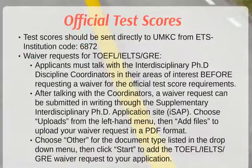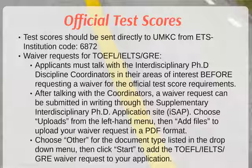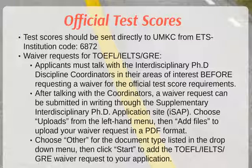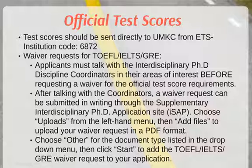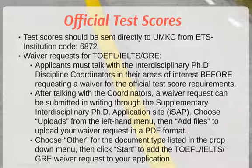The official test scores are sent directly to UMKC from the Educational Testing Service. UMKC's institution code is 6872. Applicants who would like to request a waiver for any test scores must first talk with the Interdisciplinary PhD coordinator in the disciplines of interest before requesting a waiver for the official test score requirements.